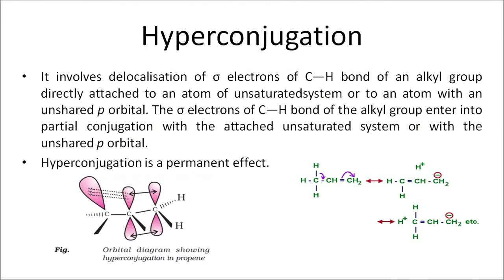Another example is the ethanoate ion. Next is hyperconjugation, which involves delocalization of electrons of C–H bonds of an alkyl group directly attached to an atom of an unsaturated system or to an atom with an unshared p orbital. The electrons of the C–H bond of alkyl groups enter into partial conjugation with the attached unsaturated system or unshared p orbital. Hyperconjugation is a permanent effect.